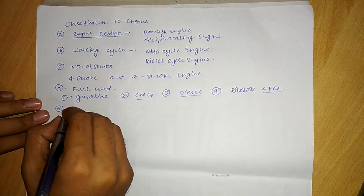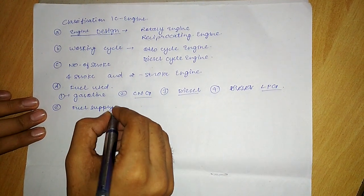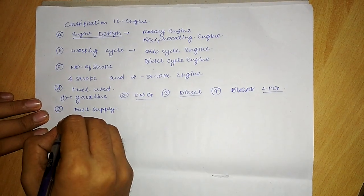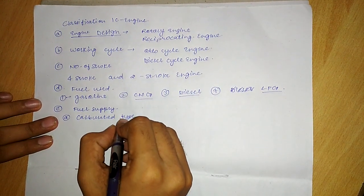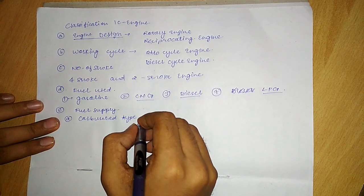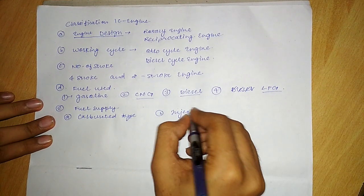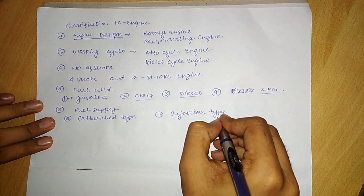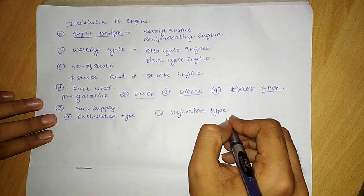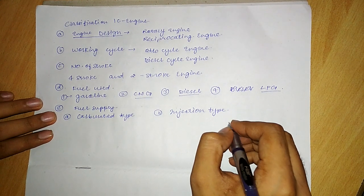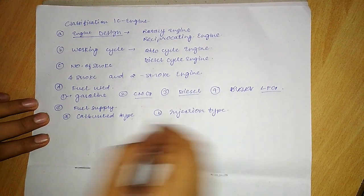The fifth classification of IC engines is on the basis of fuel supply. This is an important classification. The first type is carbureted type, where fuel is supplied through a carburetor. The second is injection type, where fuel is injected into the cylinder just before ignition, or into the inlet port or inlet manifold.